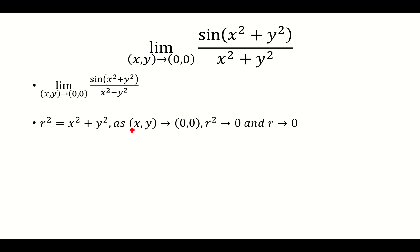So as x and y approach (0,0), r squared will approach 0 because x squared plus y squared goes to 0. And if I take the square root, r will also approach 0.